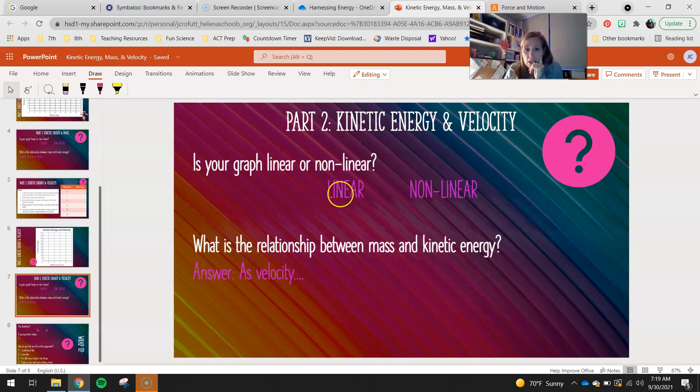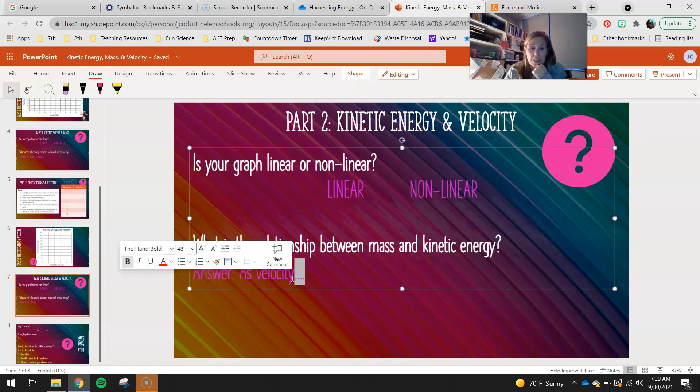And then is your graph linear or nonlinear? Again, linear means it looks like a straight line or pretty dang close to a straight line. Nonlinear is it's not a straight line. What is the relationship between mass and kinetic energy? So this is similar to the last one, but I didn't start you off with as much as I did last time. So as velocity, you guys are going to tell me either increases or decreases. You get to choose what happens to your kinetic energy. So again, get rid of those ellipses. And finish this sentence talking about how you're going to make a change to your velocity and what's going to happen to your kinetic energy.